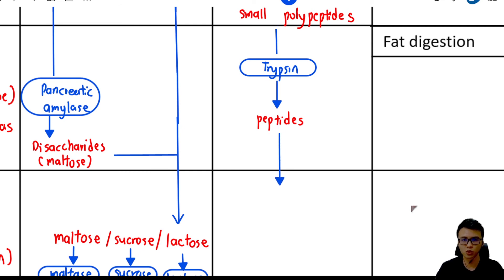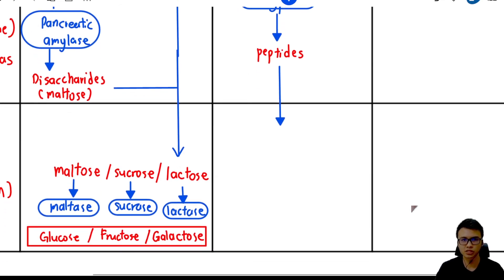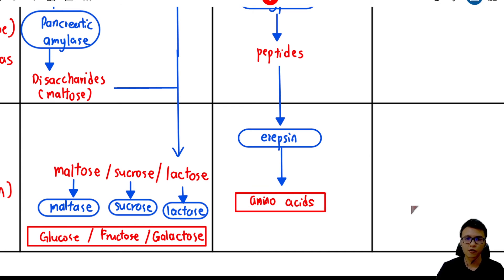After that, these peptides will go to the small intestine and be digested by an enzyme called erepsin to form the monomer of protein, which is known as amino acid.